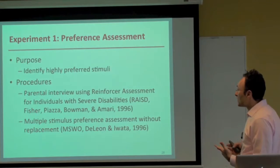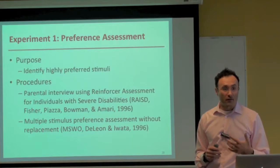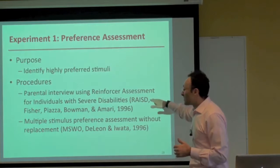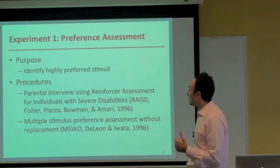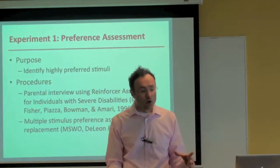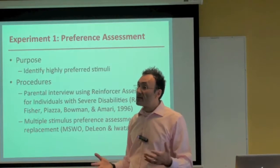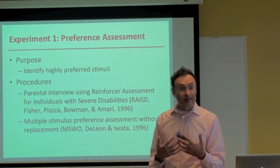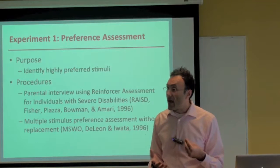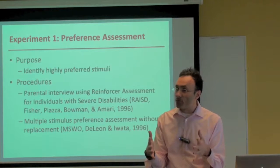For the MSWO, based on items nominated by respondents, I created a linear array of the top eight to ten items on the table, invited each participant in, identified each item and asked 'which one do you want?' The participant ate food items or interacted with activity items for about 30 seconds. The item was collected back and they chose from remaining items, so the array progressively got smaller. I did this five times for each participant.